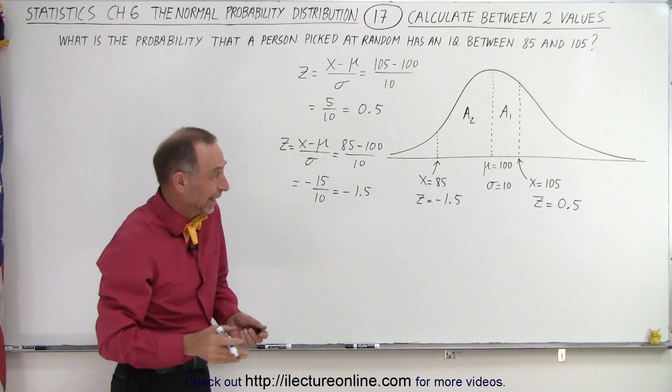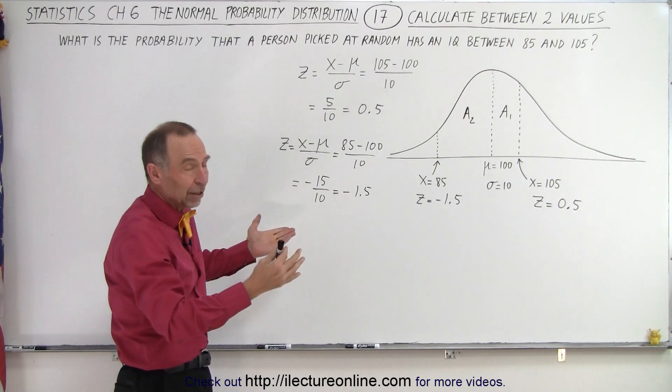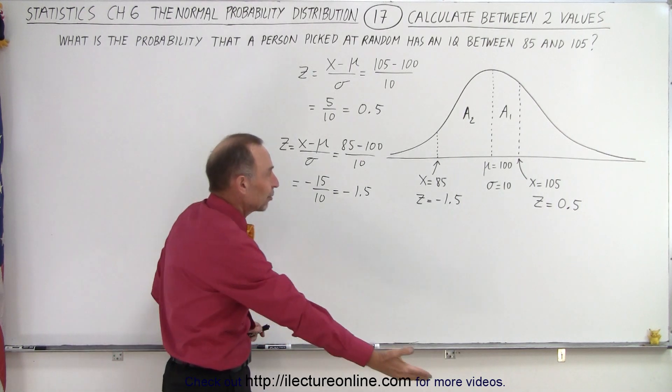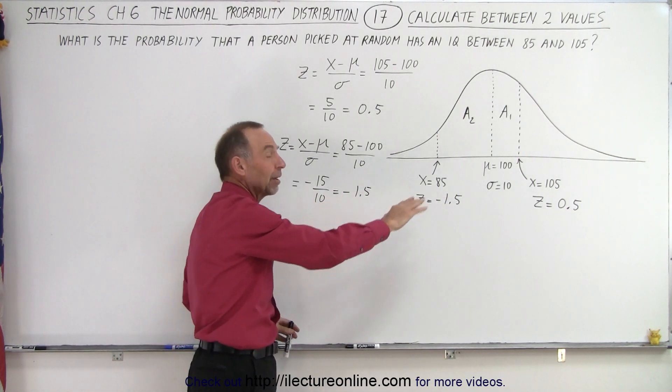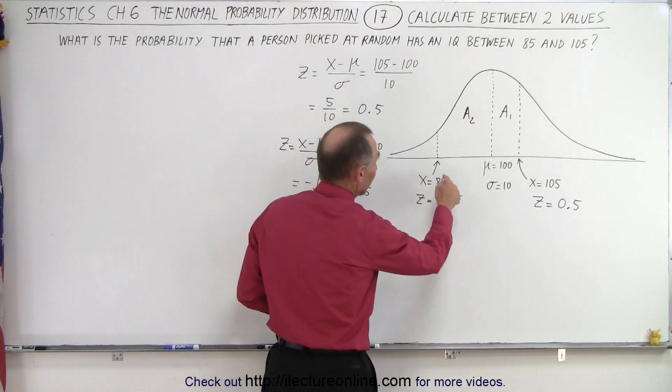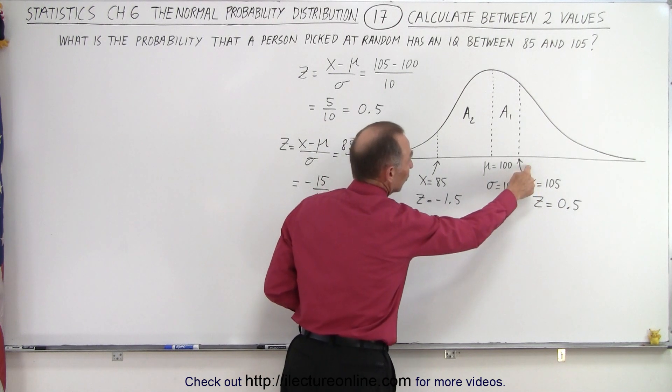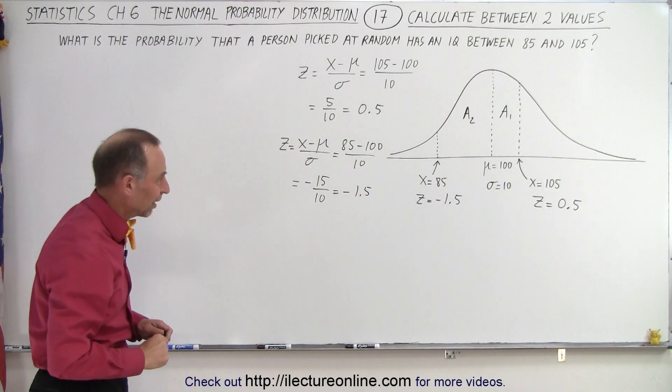Essentially, when we use the table, it doesn't really matter if it's negative or positive, you get the same value. You just realize that the negative signifies that you're on the left side of the mean, the positive signifies that you're on the right side of the mean. Because here, after all, this is minus 1.5 times sigma, and this is plus 0.5 times sigma. That's all the sign signifies.